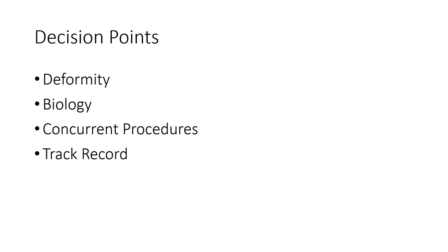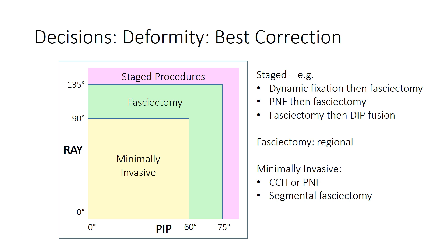The degree of contracture is the most important influence in making decisions. The breakpoints for choosing procedures for the PIP joint are around 60 degrees, and for composite contracture around 90 degrees. Below those thresholds, the patient will do pretty well with most procedures, so why not do the one with least morbidity and risk? PIP contractures greater than 60 degrees will do better long-term with a fasciectomy than with a minimally invasive procedure. And those with even greater contractures requiring technical approaches to secondary changes may need staged or combined procedures to get the best outcome.